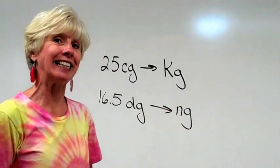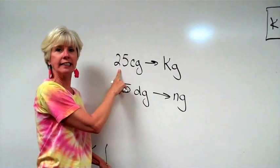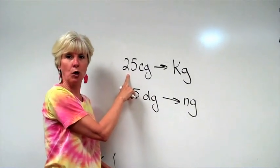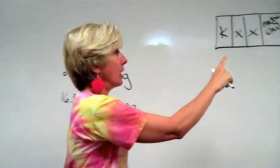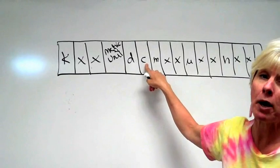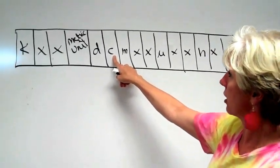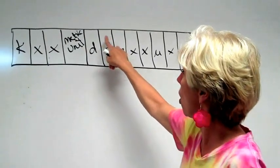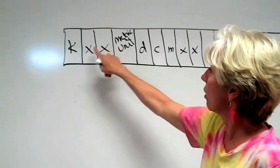So let's see how easy it is to use this method. 25 centigrams. What you do is you put your finger on the c because that's the prefix in question. Now we want to change centigrams to kilo. Where is kilo on the chart? Let's look. One, two, three, four, five places and I move my finger to the left.